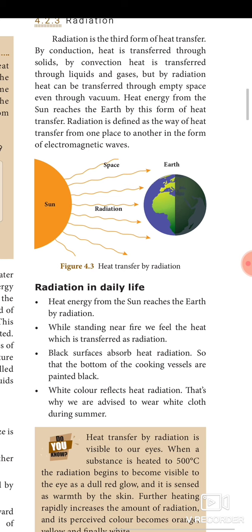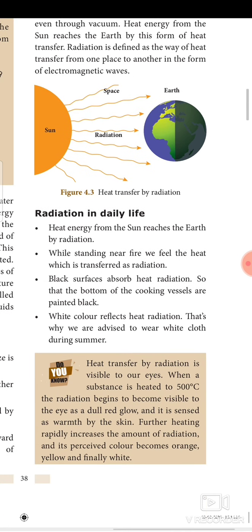Radiation in daily life: heat energy from the sun reaches the earth by radiation. While standing near fire, we feel heat which is transferred as radiation. Black surfaces absorb heat radiation, so the bottoms of cooking vessels are painted black. White color reflects heat radiation — that's why we are advised to wear white clothes during summer. Heat transfer by radiation becomes visible to our eyes when a substance is heated to 500 degrees Celsius; the radiation begins to appear as a dull red glow. Further heating increases the radiation, and the perceived color becomes orange, yellow, and finally white.